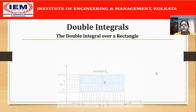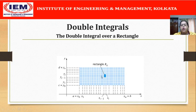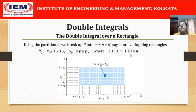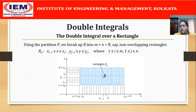Let us see that in the next figure. Here we can see a small rectangle rᵢⱼ. How many such rectangles are there? The number of rectangles will be m × n, and let us call that capital N. So the entire rectangle r has been broken up into N non-overlapping rectangles rᵢⱼ, where i varies from 1 to m and j varies from 1 to n. This rectangle has length xᵢ − xᵢ₋₁, which we call Δxᵢ, and width yⱼ − yⱼ₋₁, which we call Δyⱼ.